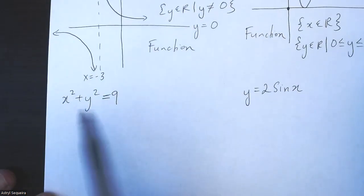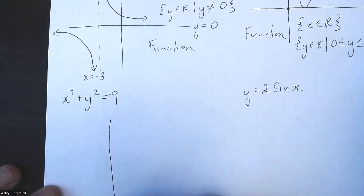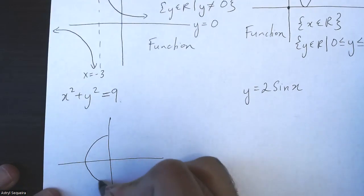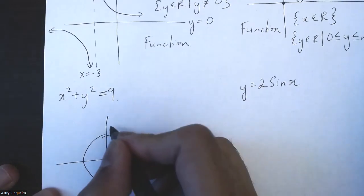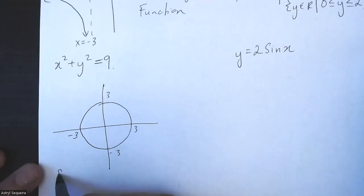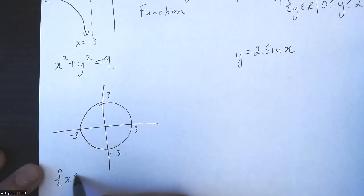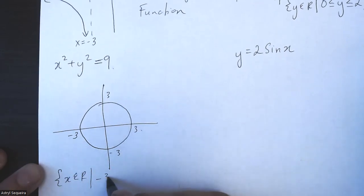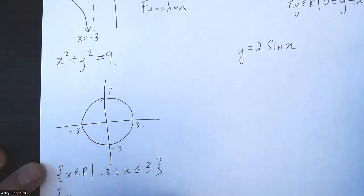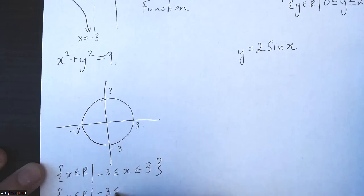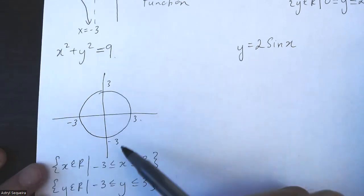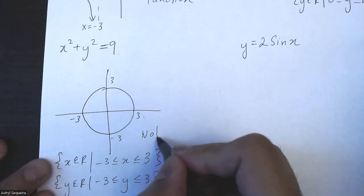The next one is the equation of a circle. The radius of the circle is just the square root of the constant, so in this case the radius is three. The domain and range are both very similar: my domain is between -3 and +3, and the range is also between -3 and +3. A circle does not pass the vertical line test, so this is not a function.